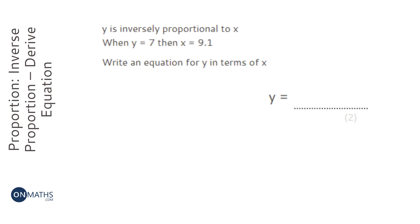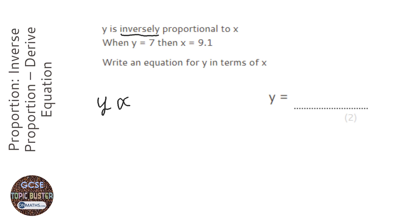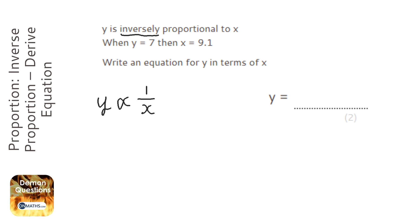This question says that y is inversely proportional to x. The way of writing that down is y with a proportionality symbol — it looks like a fish — which means y is proportional. The inversely bit means we put 1 over x. That's the difference: if it says inversely, you put 1 over it. Now we're going to replace that proportionality sign with an equals sign, but to do that we need to multiply the right-hand side by k, so it becomes k over x.